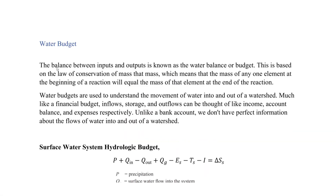In this video we will discuss the water budget and how this relates to our water resources and environmental engineering section for the FE exam. The water budget, sometimes called the water balance, is the balance between inputs and outputs. It affects how much water is stored in a system, based on the law of conservation of mass — whatever comes in has to come out.